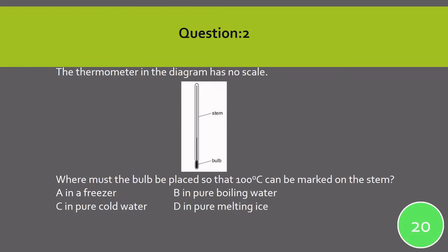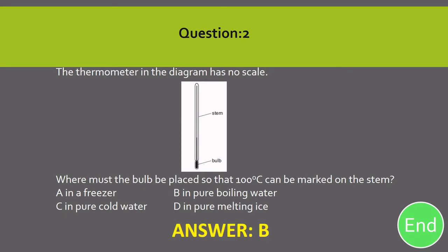Second question: The thermometer in the diagram has no scale. Where must the bulb be placed so that 100 degrees Celsius can be marked on it? Option A: in a freezer. Option B: in pure boiling water. Option C: in pure cold water. Option D: in pure melting ice. The correct answer is B — in pure boiling water — because the boiling point of water is 100 degrees Celsius.